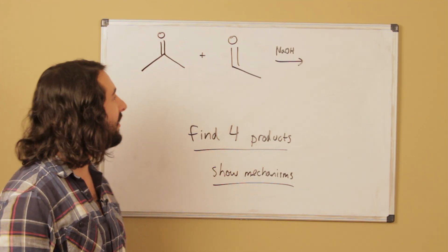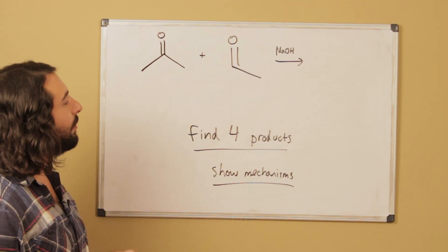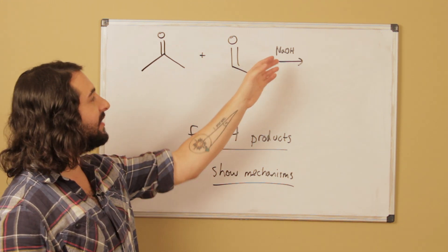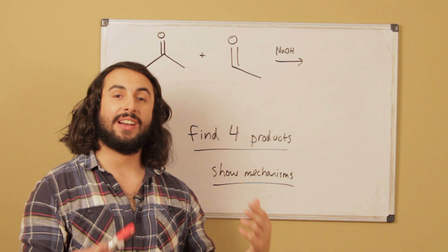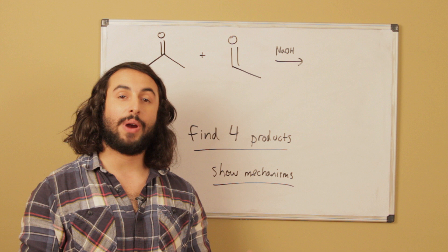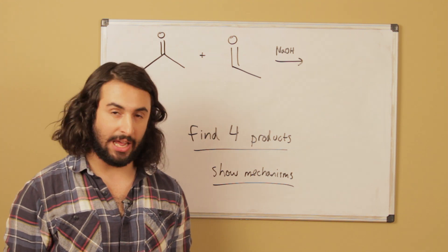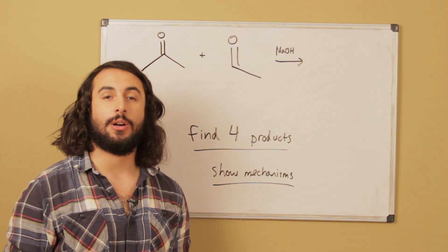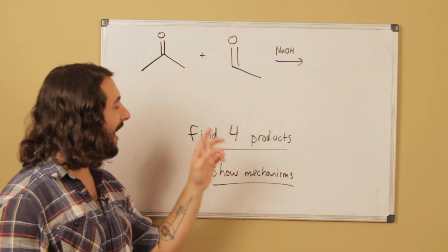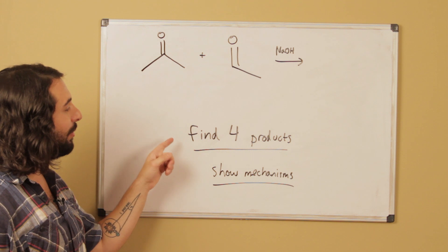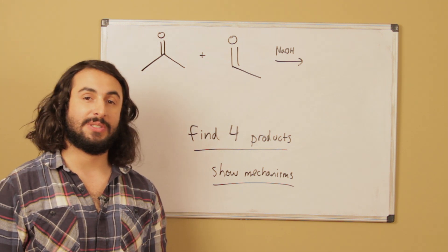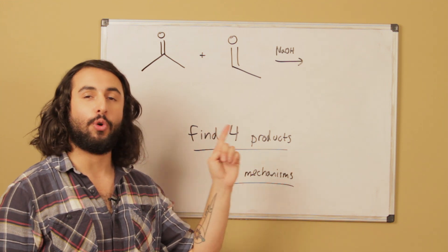For this practice problem we have acetone, a ketone, and a two-carbon aldehyde. This product mixture in the presence of sodium hydroxide is going to give a number of products. As a hint, we have a strong base with aldehydes and ketones, so we're probably going to be doing some kind of enolate chemistry. Check out my tutorial on aldol condensation for a tip. We want to find four possible products with the mechanisms that lead to them.